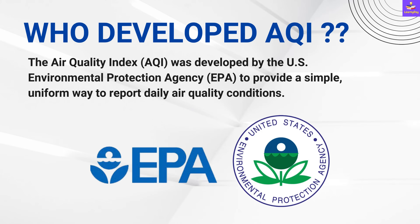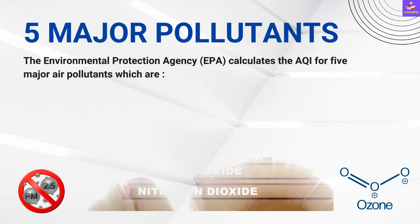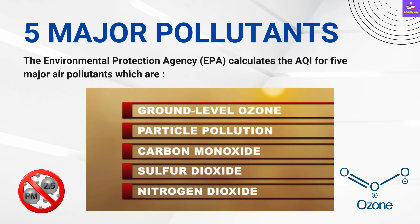The AQI was developed by the US Environmental Protection Agency, which is called the EPA, to provide a simple, uniform way to report daily air quality conditions. The EPA calculates the AQI for 5 major air pollutants: ground-level ozone, particle pollution also called particulate matter (for example PM2.5 and PM10), Carbon Monoxide, Sulphur Dioxide, and Nitrogen Dioxide.